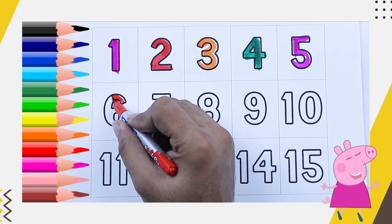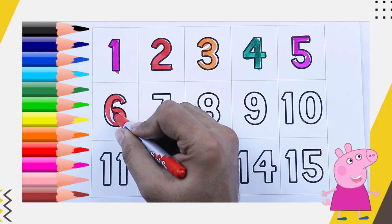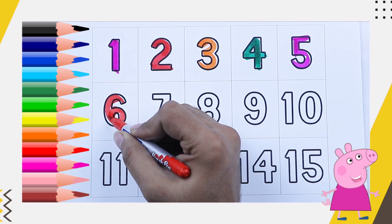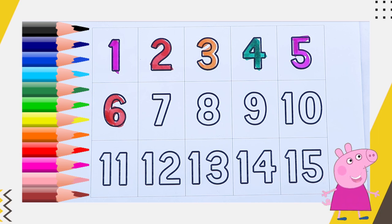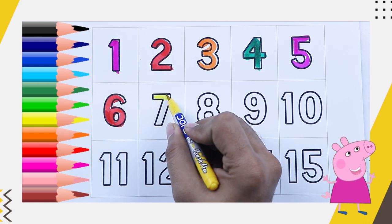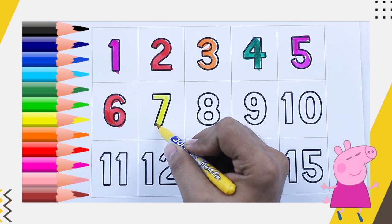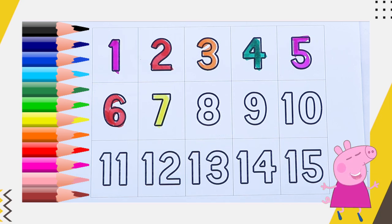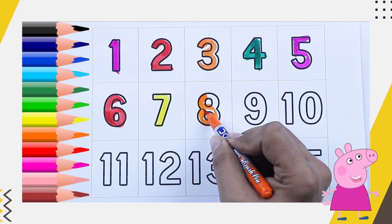6 — red color, 6. Yellow color, 7. What is the next? Yellow color, 7. Orange color, 7.